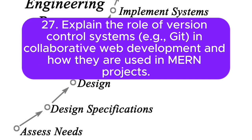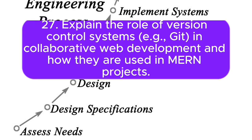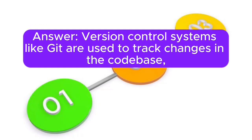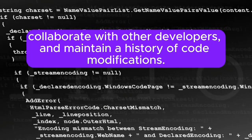27. Explain the role of version control systems — for example, Git — in collaborative web development, and how they are used in MERN projects. Answer: Version control systems like Git are used to track changes in the codebase, collaborate with other developers, and maintain a history of code modifications.